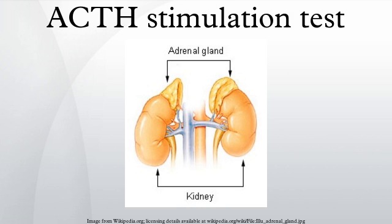The prolonged stimulation test, which is also called a long conventional dose test, can last up to 48 hours. This form of the test can differentiate between primary, secondary, and tertiary adrenal insufficiency. This form of the test is rarely performed because earlier testing of cortisol and ACTH levels in association with a short test may provide all the necessary information.